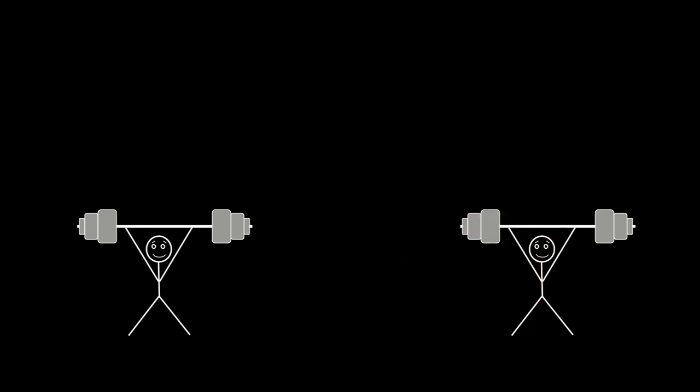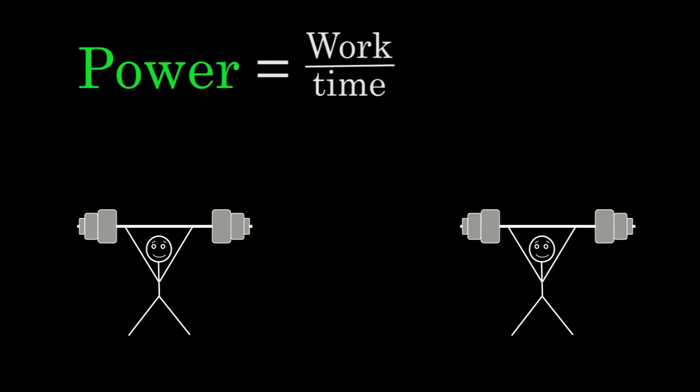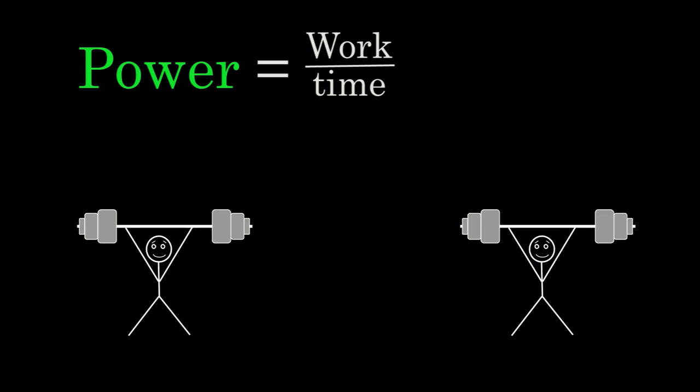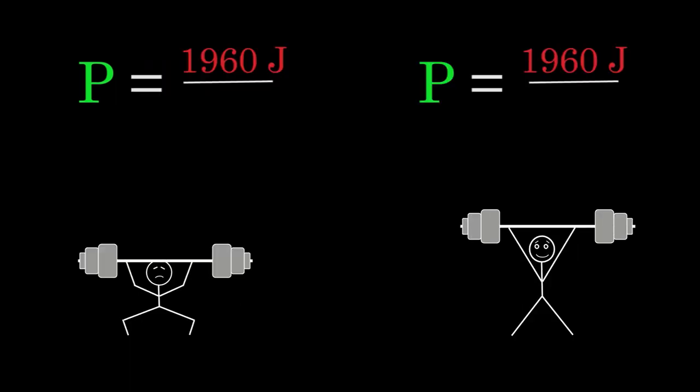To be specific, power is defined as the work done divided by the time that it took to do that work. We already said that both weightlifters are doing 1,960 joules of work.